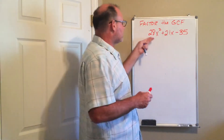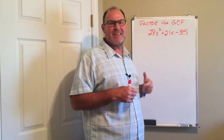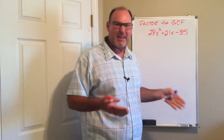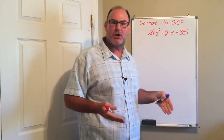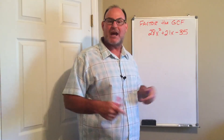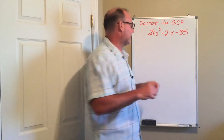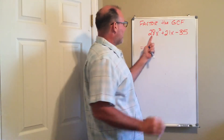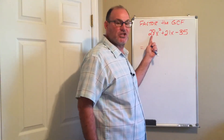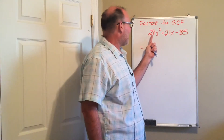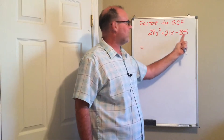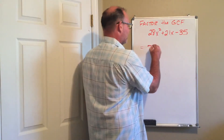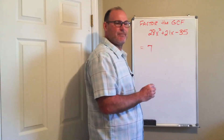For a particular problem like this, we could say that we are undistributing. I know that's not really a word, but it gives you an idea of what we're doing. So here we go — I look at the coefficients first, and 28, 21, and 35 all have a common factor of 7.